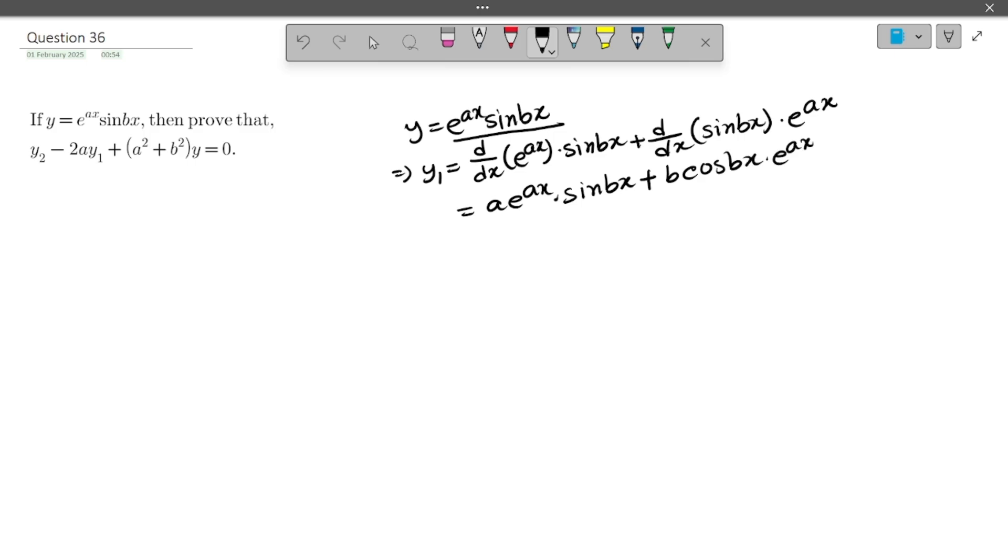Now see that y equals e to the power ax into sin bx and here is also e to the power ax into sin bx. So we will replace it with y. So it will be ay plus, if we rearrange this, it will be e to the power ax cos bx.